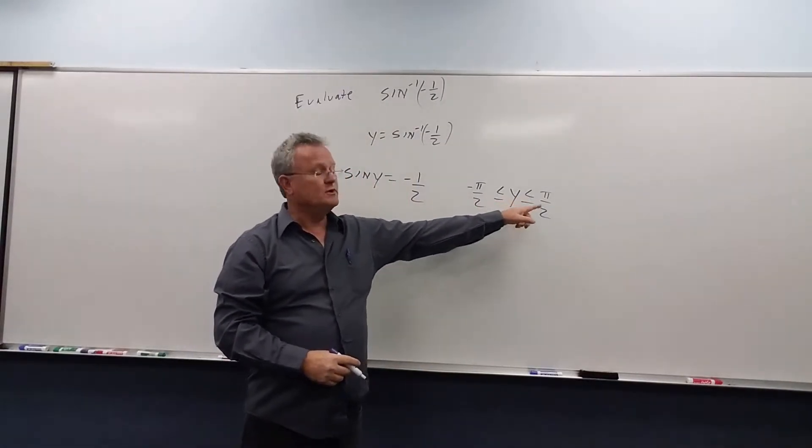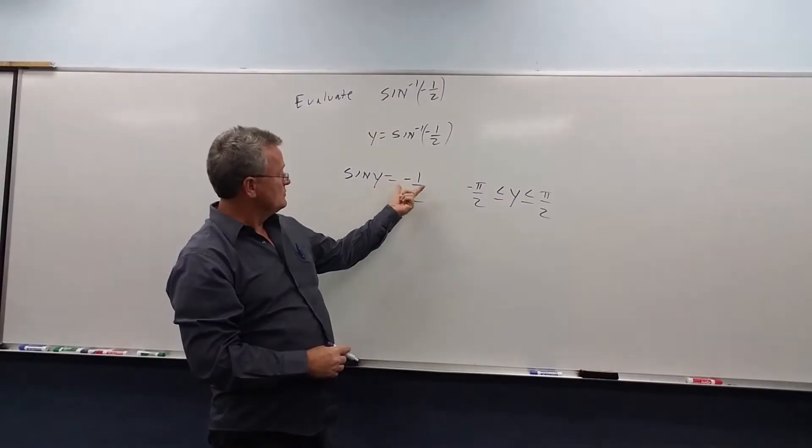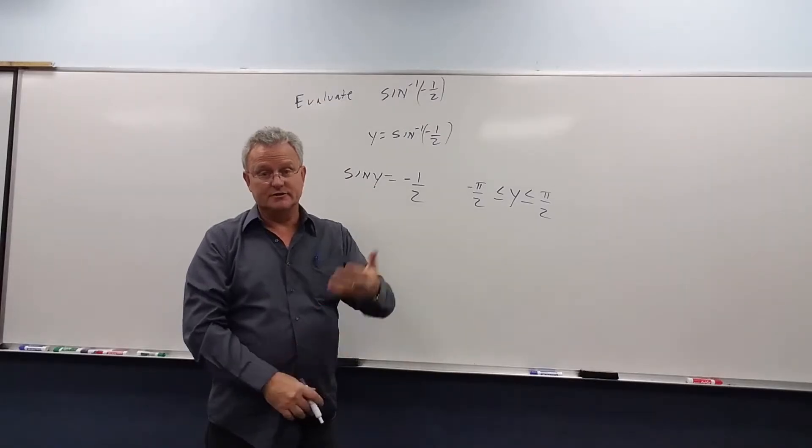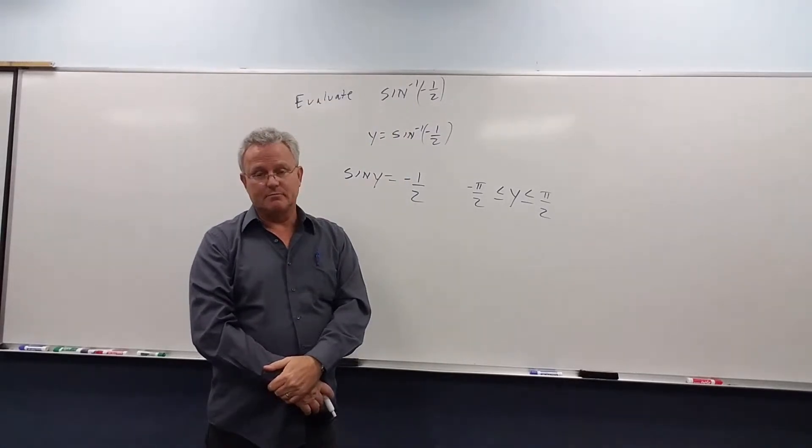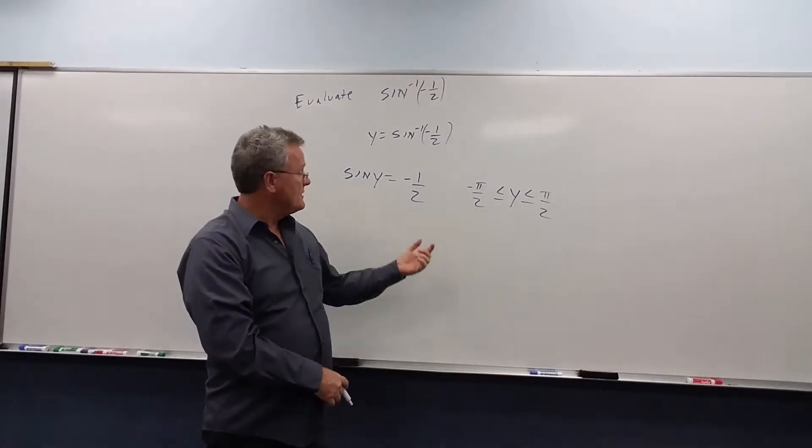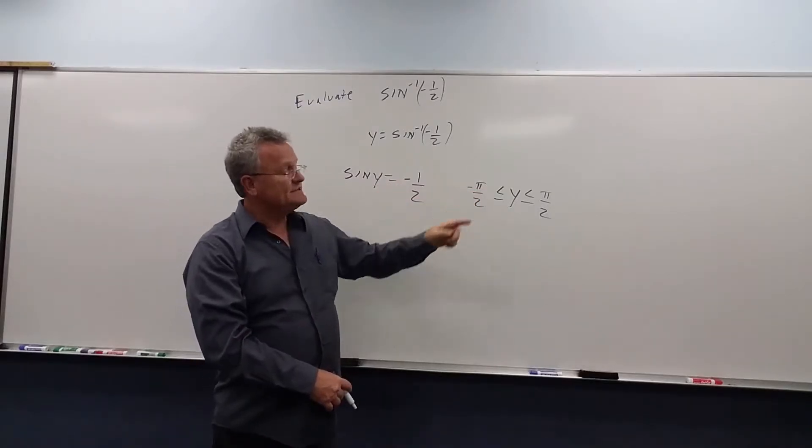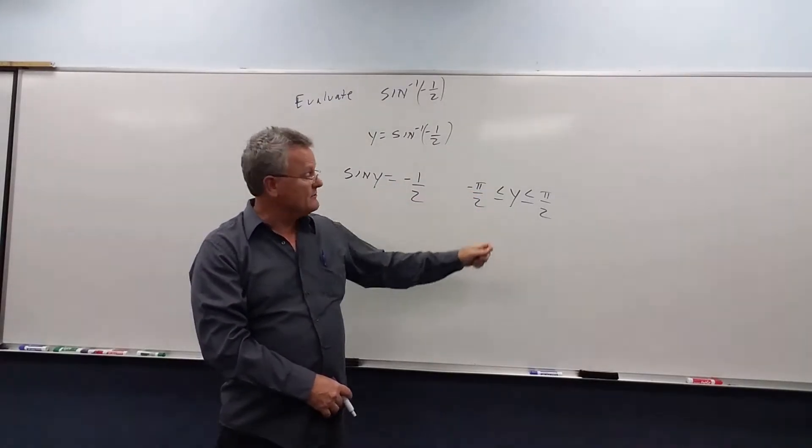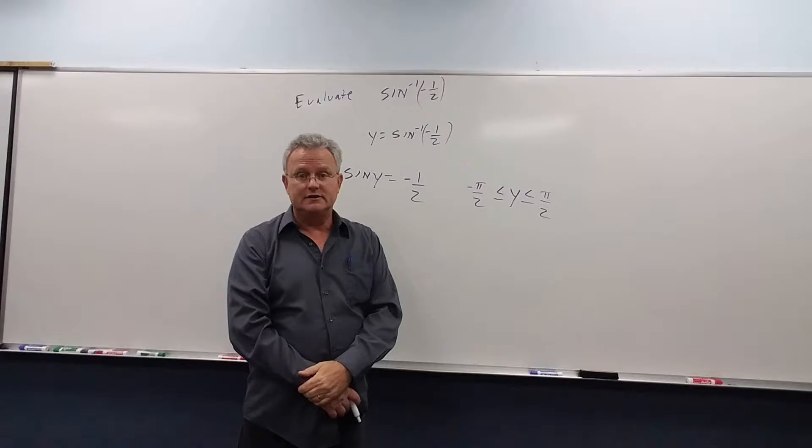Well, if y is between 0 and π/2, we're going to get a positive answer because all the trig functions are positive in quadrant 1. Because sine is negative, it's got to be in the fourth quadrant between negative 90 and 0.